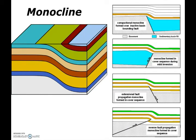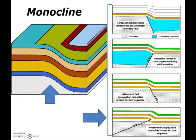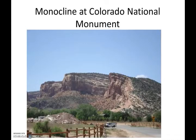Another type of fold that can form in areas of compression is known as a monocline. Monoclines form as large, step-like folds in otherwise horizontal sedimentary strata, and they only have one limb. Monoclines are often the product of a reverse fault that has occurred somewhere deep in the crust, where sedimentary rocks above the fault deform as a ductile solid, folding over the fault to produce a monoclinal fold. This is a picture of a well-known monoclinal fold at the Colorado National Monument in western Colorado — notice the dipping limb.